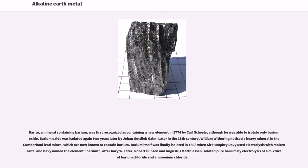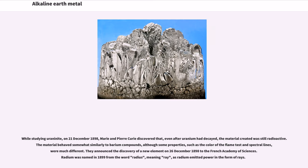Later, Robert Bunsen and Augustus Matthiessen isolated pure barium by electrolysis of a mixture of barium chloride and ammonium chloride. While studying uraninite, on December 21, 1898, Marie and Pierre Curie discovered that, even after uranium had decayed, the material created was still radioactive. The material behaved somewhat similarly to barium compounds, although some properties, such as the color of the flame test and spectral lines, were much different. They announced the discovery of a new element on December 26, 1898 to the French Academy of Sciences. Radium was named in 1899 from the word radius, meaning ray, as radium emitted power in the form of rays.